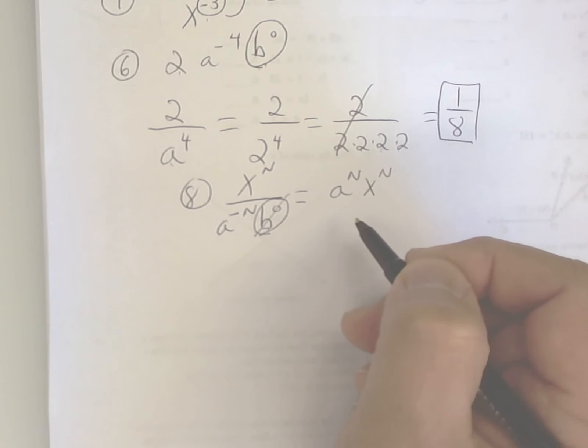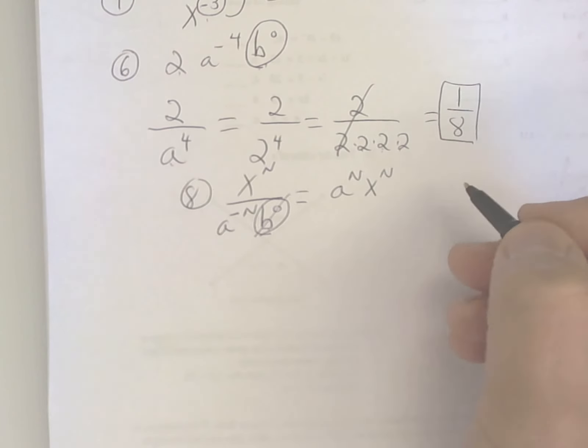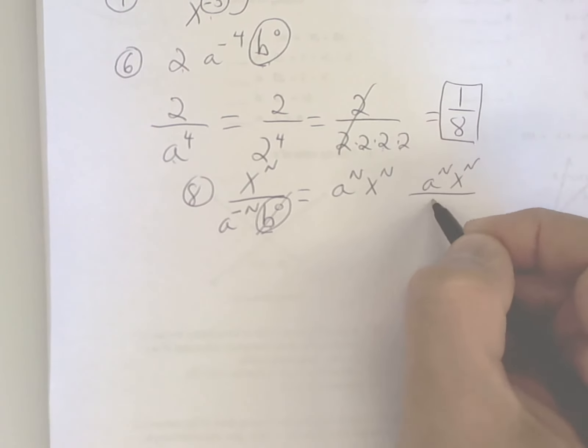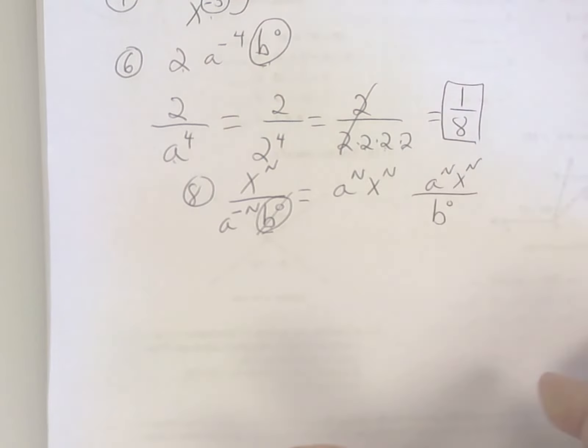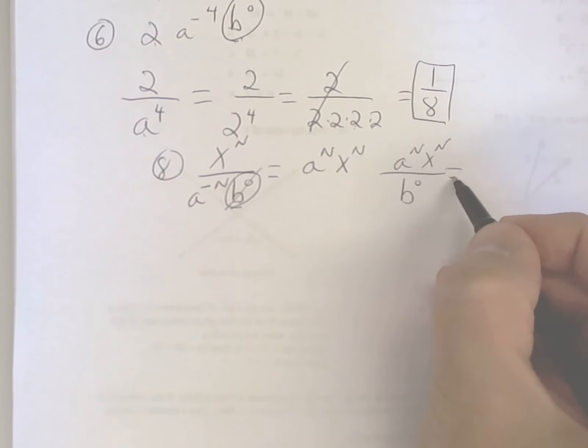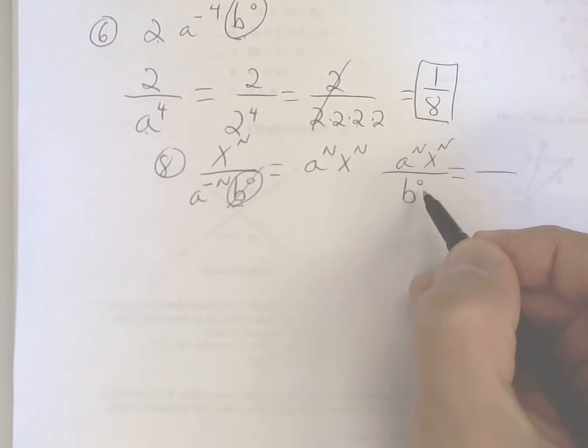Now here they ended up with a zero at the bottom, so their mistake was if you look at it, they have b to the zero is equal to zero, and that's not true. This is what they have so far, but the next step they put a zero down here and that's not correct. B to the zero is equal to one. If you look in the book, the book has a zero and it should be a one. You're okay with that now? Yeah. All right, what else?